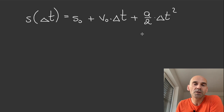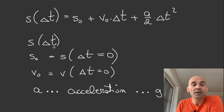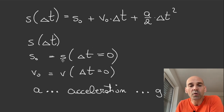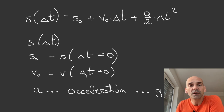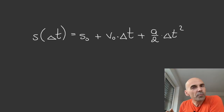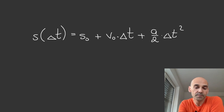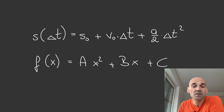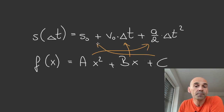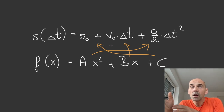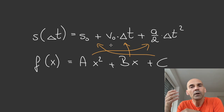Before we launch Tracker, let's look at the equation that describes the free fall. It looks complicated but only at first glance. We have S of delta t — the position after the time span delta t has elapsed — V0, the initial position, V0 the initial velocity, and A the acceleration, usually written as lowercase g. You've probably noticed the similarity with the standard form of a quadratic function: f(x) = ax² + bx + c. After analyzing our data in Tracker, we hope to see the graph of a quadratic function — a parabola.